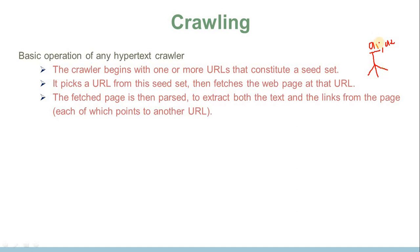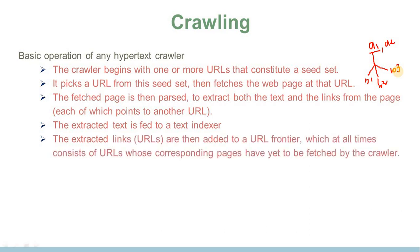The crawler extracts links from the fetched page — for example, links B1, B2, and B3. The extracted text is fed to a text indexer, and the extracted links are then added to the URL frontier, which at all times consists of URLs whose corresponding pages have yet to be fetched. This frontier is maintained as a queue, so newly found URLs are appended to the back of the queue.